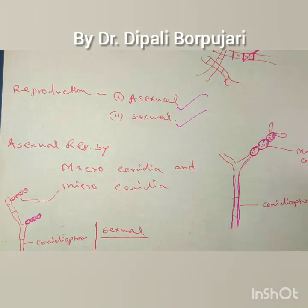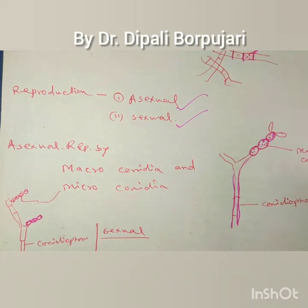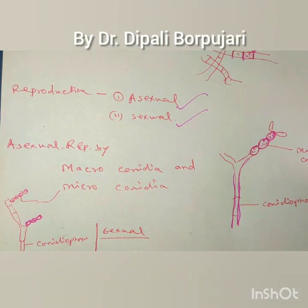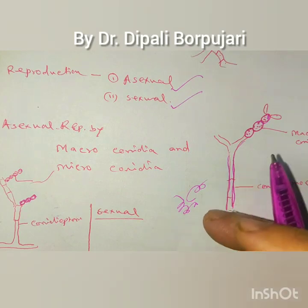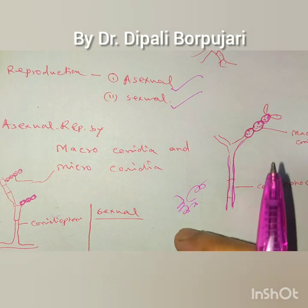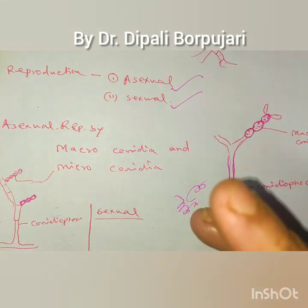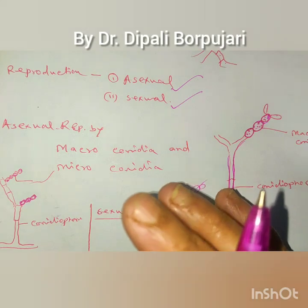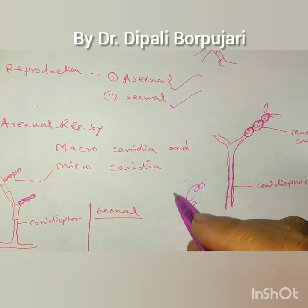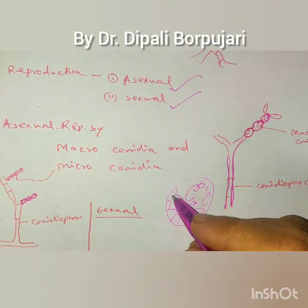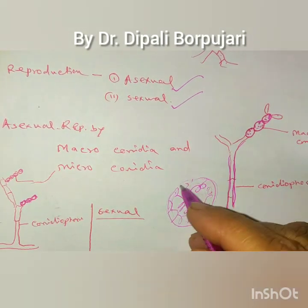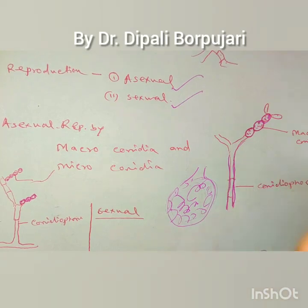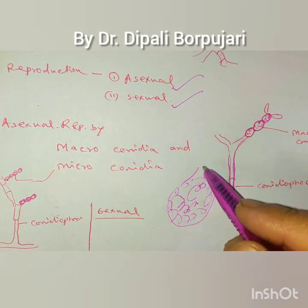The female sex organ is known as ascogonium, which is a coiled structure. It forms a pseudoparenchymatous structure known as protoperithecia. Pseudo means false — they are false tissue, not true tissue. This mass of tissue forms what is called protoperithecia, the fruit body.